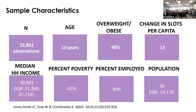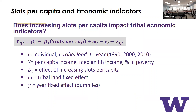In terms of study demographics: we have roughly 23,000 observations over a time period of 2001 to 2012. The average age is 13 years old, prevalence of overweight and obesity is 48%, and the average change in slots per capita for those who opened a casino was 13 slots. Median household income is $30,000 per year, 42% of the population is living in poverty, 80% is employed, and the average size of the tribal population on tribal lands is 70 people.